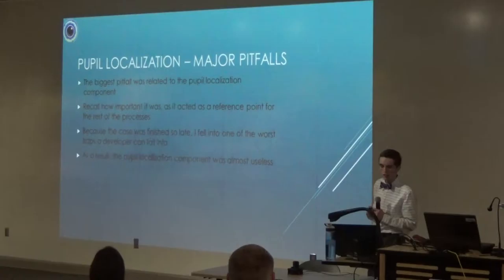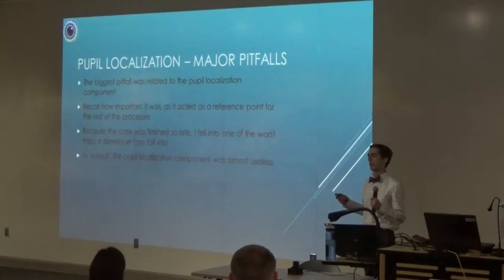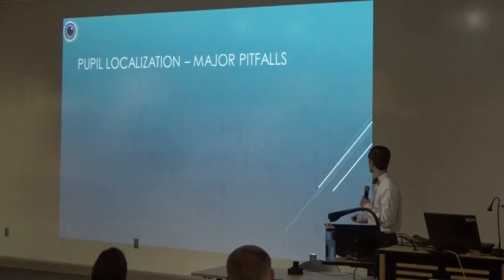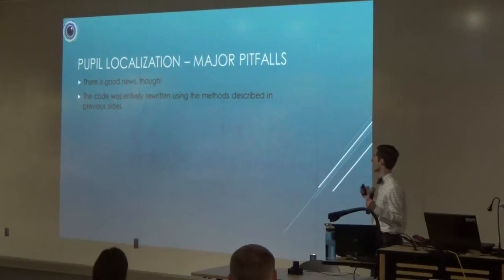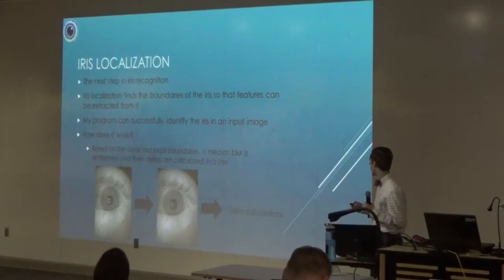Here are input and output images taken with the camera showing my code perfectly finding the pupil. I did have some major pitfalls with consistency. Because we got the case done later than intended, I fell into one of the most devastating traps a developer can fall into: I was coding for only one or two test images, so when I got new test images with the case done, everything didn't work. Those failure examples show it was clearly not finding the pupil. I had to go back and rewrite all my code using the binary thresholding method I described, and it now works much more consistently.